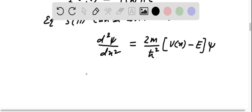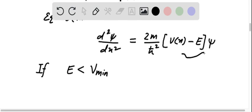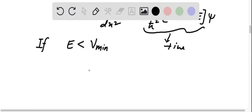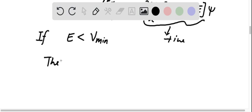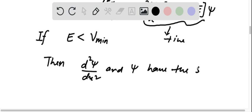Now, if E is less than V minimum (as given in the question), then d²ψ/dx² will be positive when the coefficient (V(x) − E) is positive. This whole factor will be positive, hence the second derivative and the wave function ψ will have the same sign — that is, both positive.